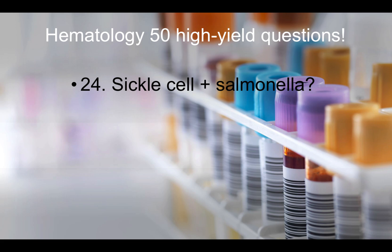Question twenty-four: Sickle cell plus salmonella in the question stem should make you think of what? That would be osteomyelitis. If a question stem talks about a kid with sickle cell who is now diagnosed with salmonella, the likely diagnosis is osteomyelitis.